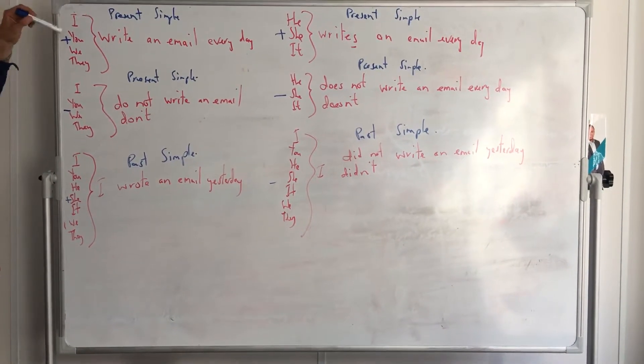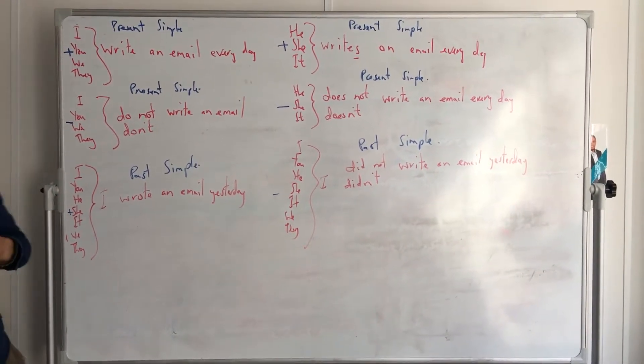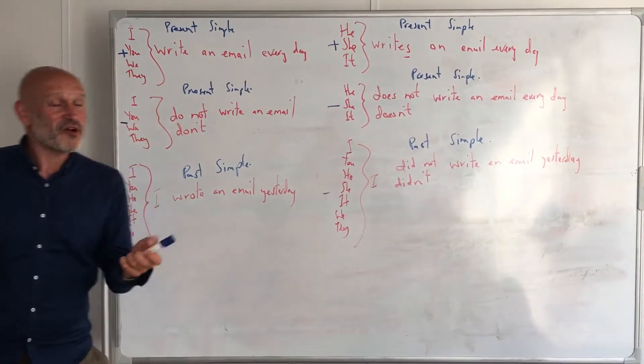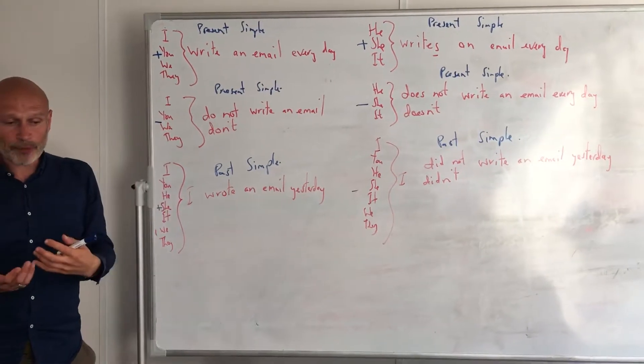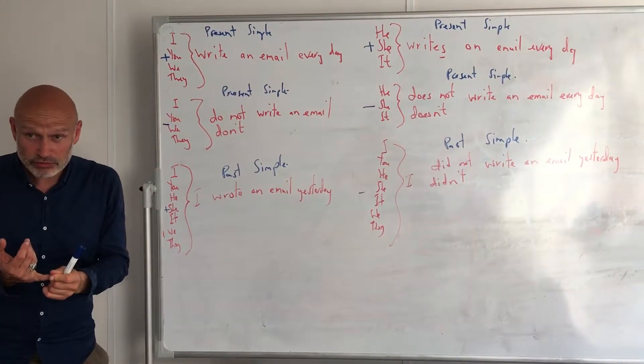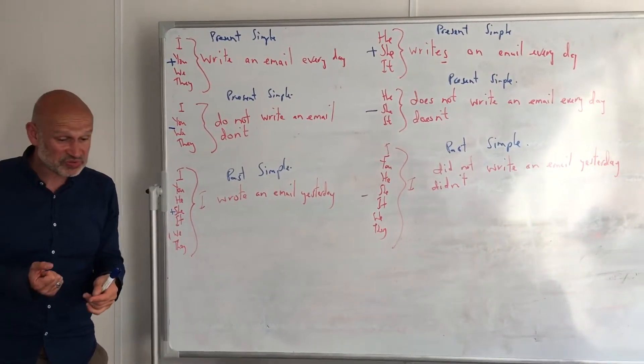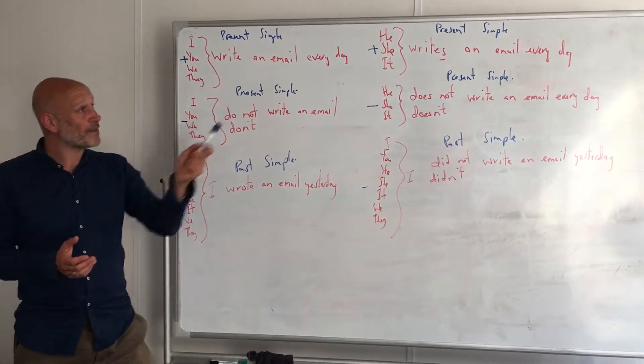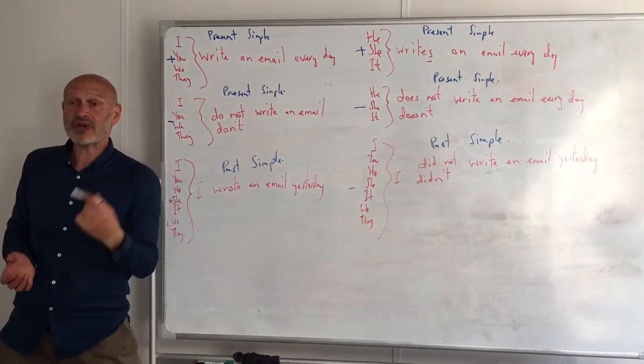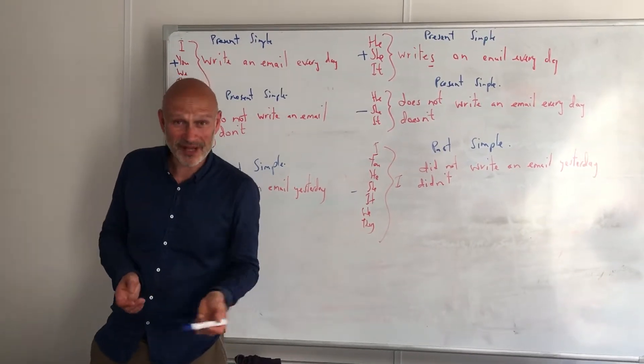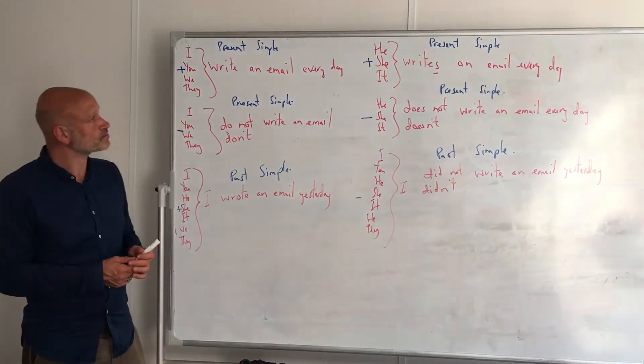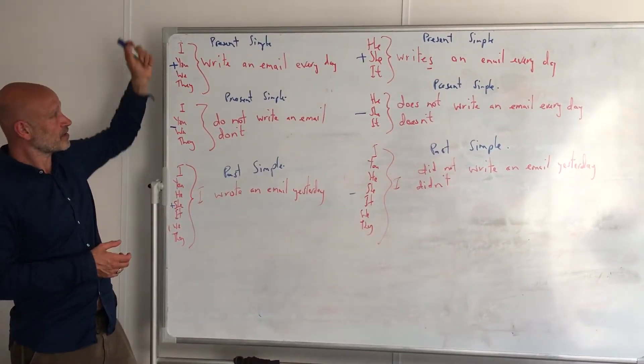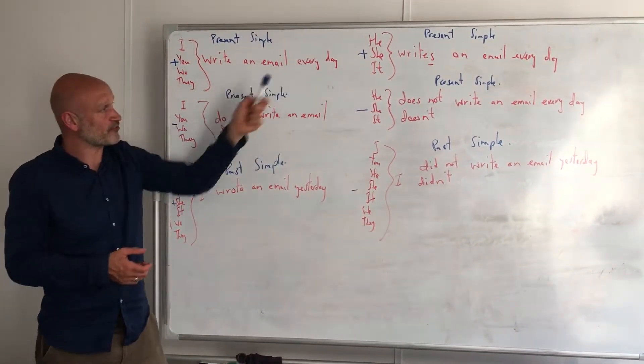We use one of these subjects: I, you, we, or they, and we say 'I write an email every day.' When we talk in the present simple, we talk about information—the sky is blue, this chair is comfortable—and we talk about habits, things we do every day, once a week, once a month, things like that. And we use the same language for I, you, we, and they: 'I write an email every day.'